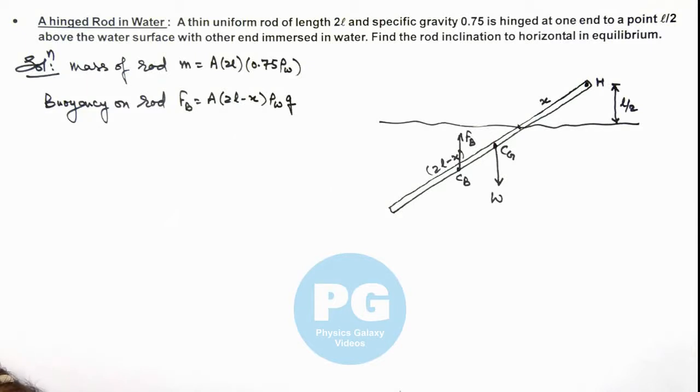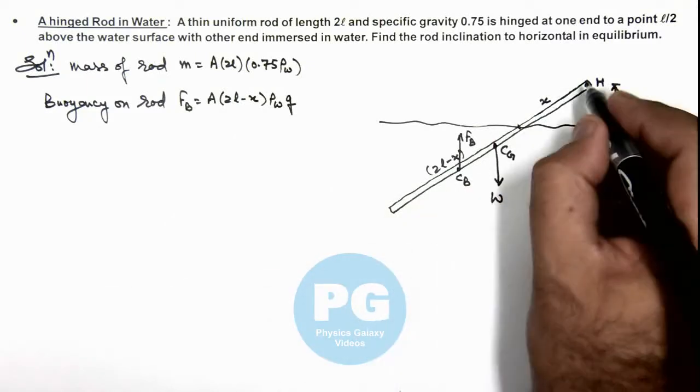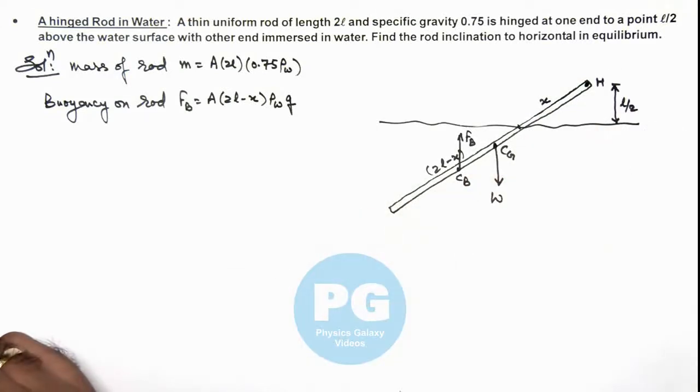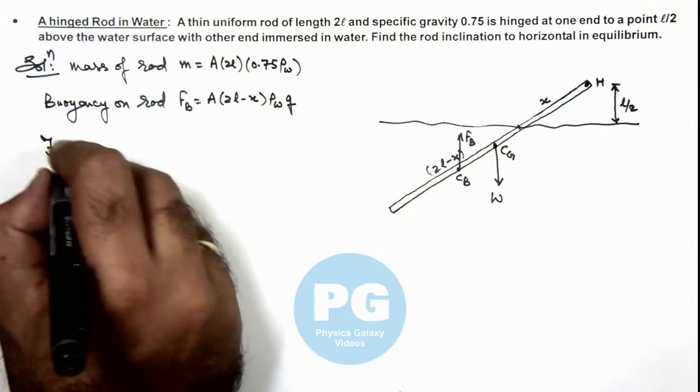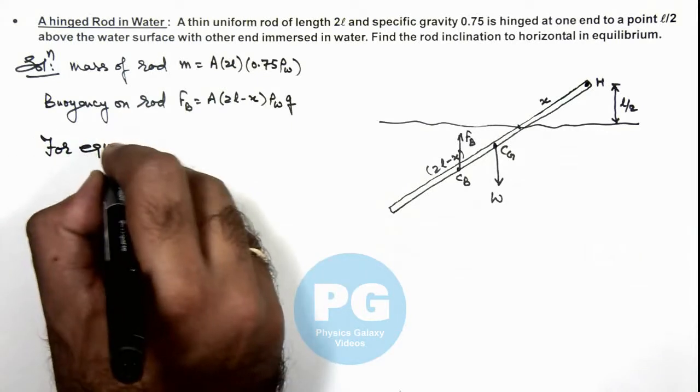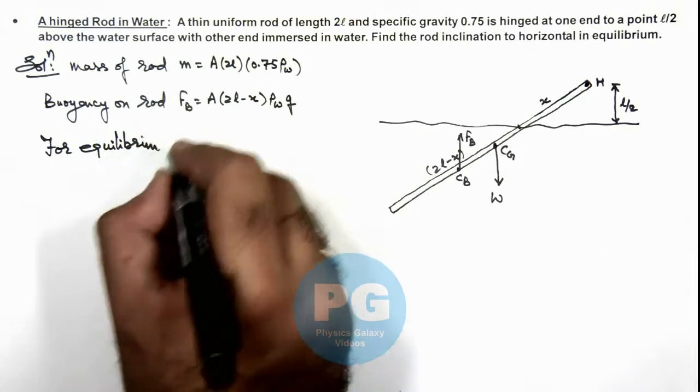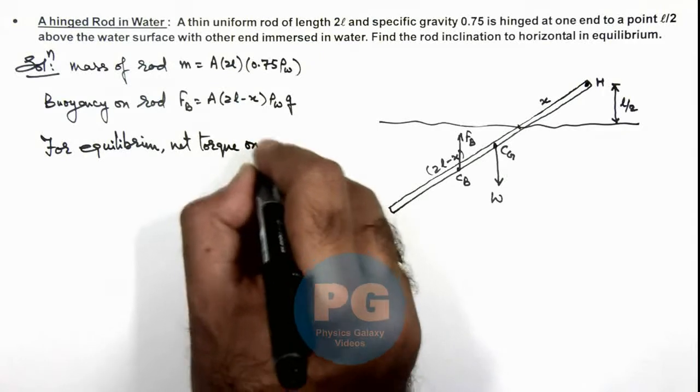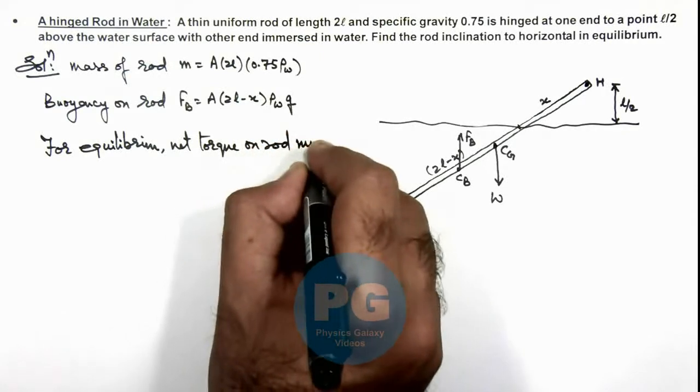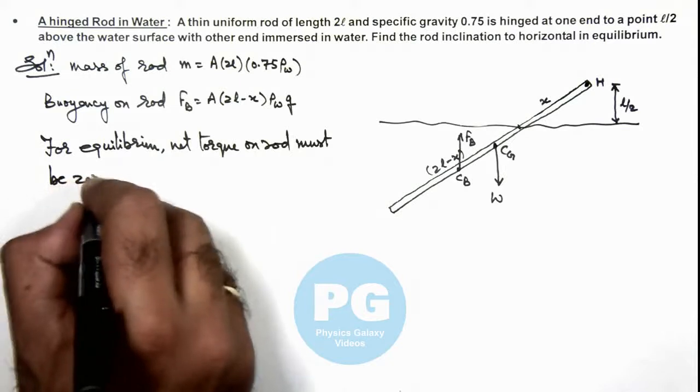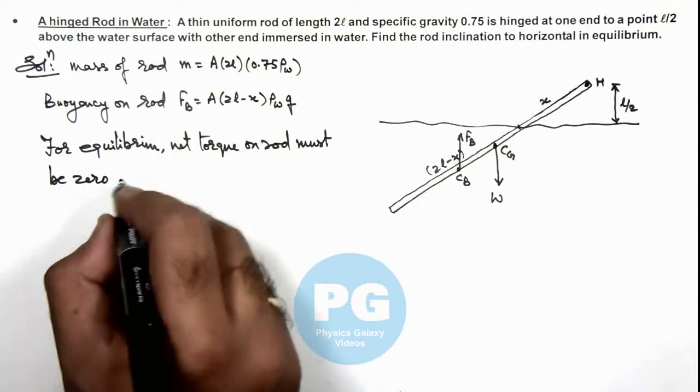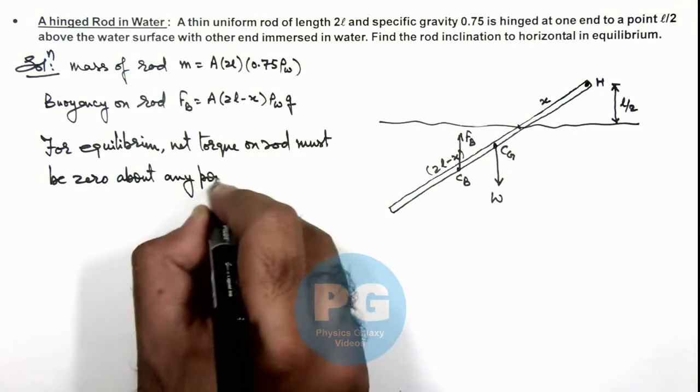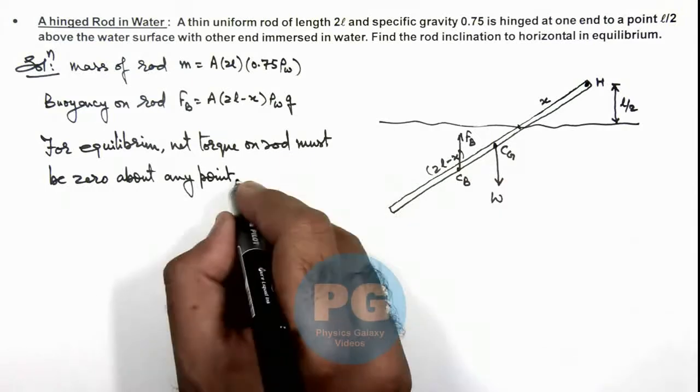Now in this situation if the rod is in equilibrium we can write about the hinge, the total torque on this rod must be equal to zero. So we can write for equilibrium, net torque on rod must be zero. This can be considered zero about any point. So here we can consider about H also.